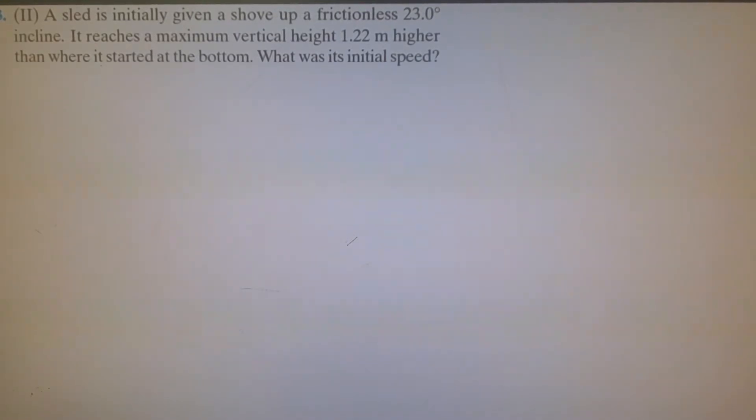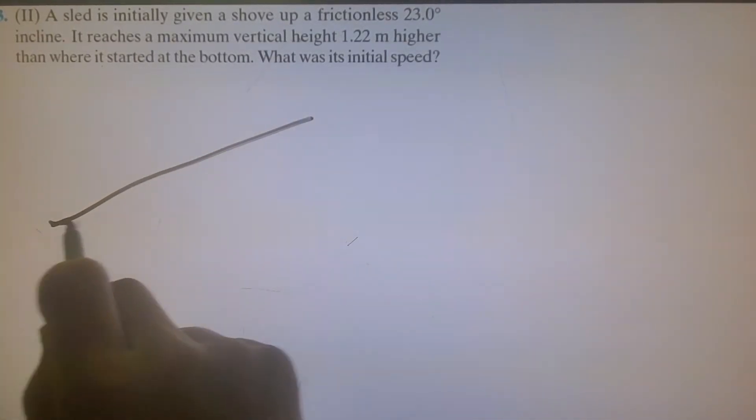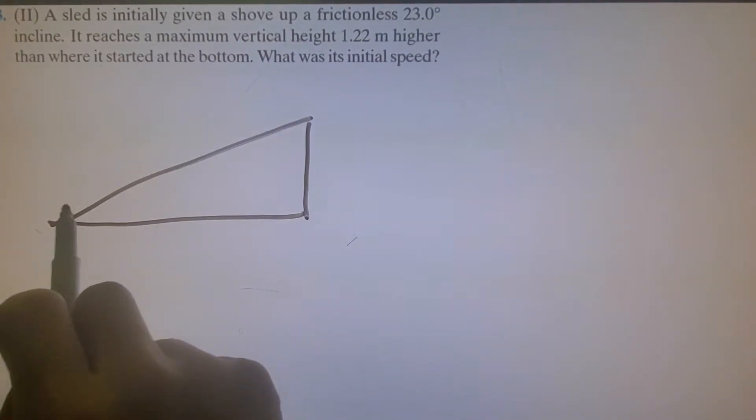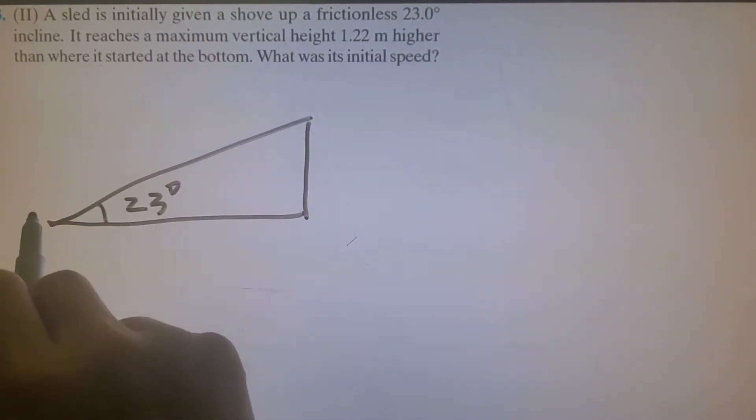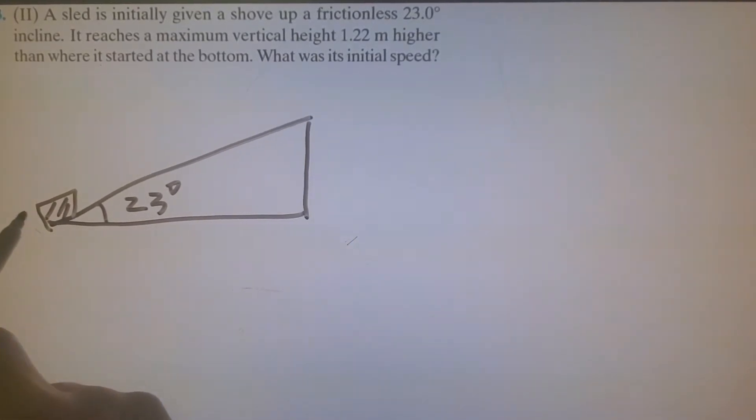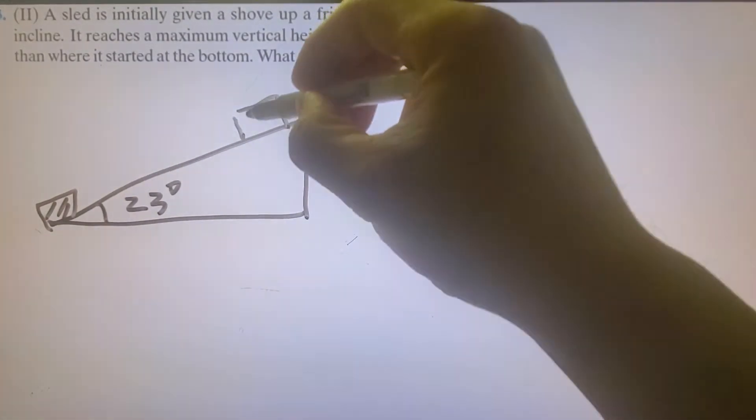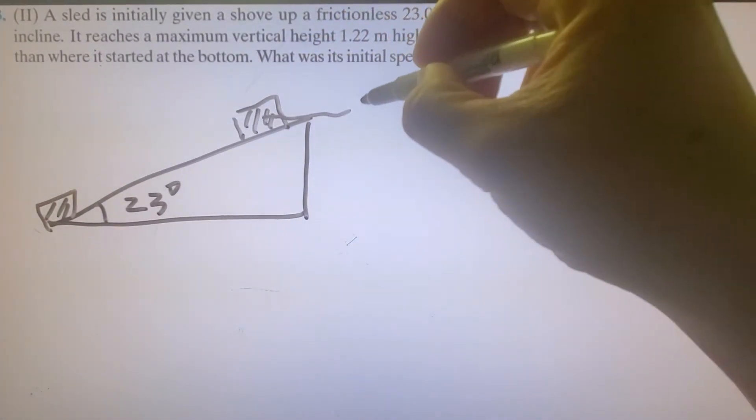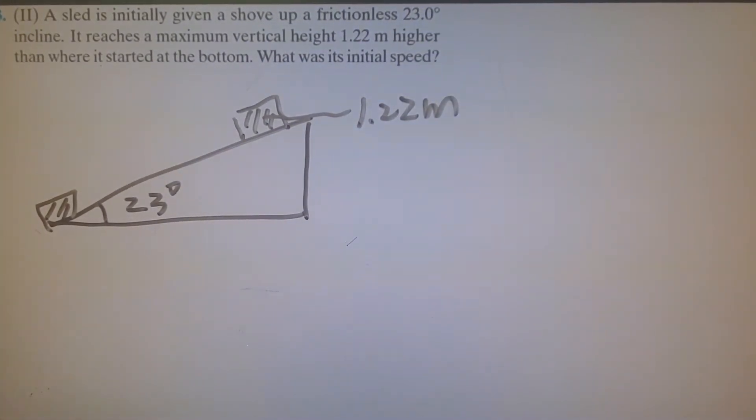An object is moved upward at an angle of 23 degrees, so you have an initial velocity. When it goes to the highest point, it's 1.22 meters high. What is the initial speed?